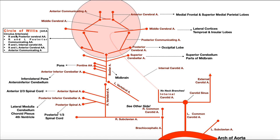The circle of Willis is also called the circulus arteriosus, and it functions as one giant anastomosis — a network of blood vessels that allows multiple pathways so that if there's a blockage somewhere, blood can still reach other areas. This minimizes the destructive effects of a stroke. Without this anastomosis, strokes would be far more severe with a much higher fatality rate.